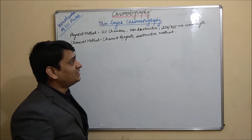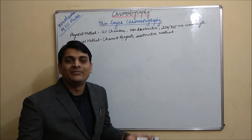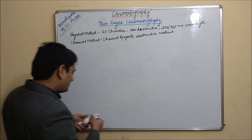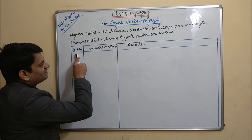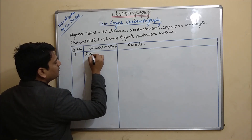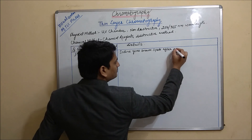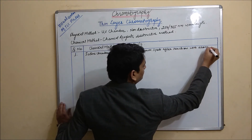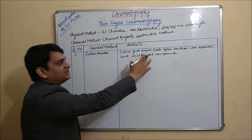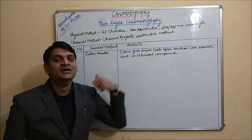Now coming to the second method which is chemical method. It is a destructive method and in this chemical method we are using various chemicals for detection of different types of compounds in TLC. First one is iodine chamber. Iodine gives brown spots after reaction with aromatic and unsaturated compounds, so it is used for detection of aromatic and unsaturated compounds.